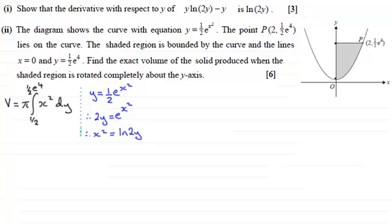So I can change my integral now to be that that volume v will equal pi times the integral of x squared which is now the natural log of 2y. And that's integrated with respect to y. Going between the limits of a half and a half e to the power 4.